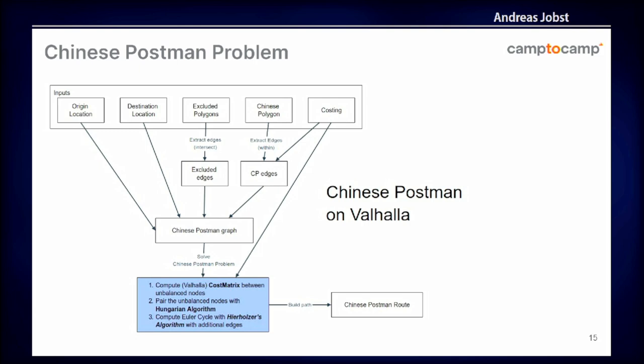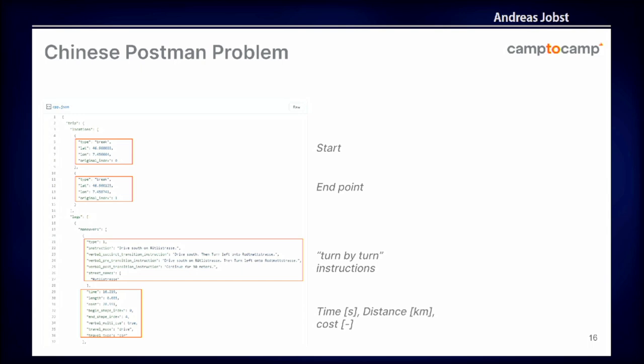All of this goes into Valhalla, and as a result it provides the Chinese Postman route. The route comes as a JSON file. What we thought would be useful is shown here: the start point, end point, and turn-by-turn instructions. For each maneuver, you get the time it takes, the distance in kilometers, and the cost — which doesn't have an actual unit. This can be used by the end application in different ways for navigation.